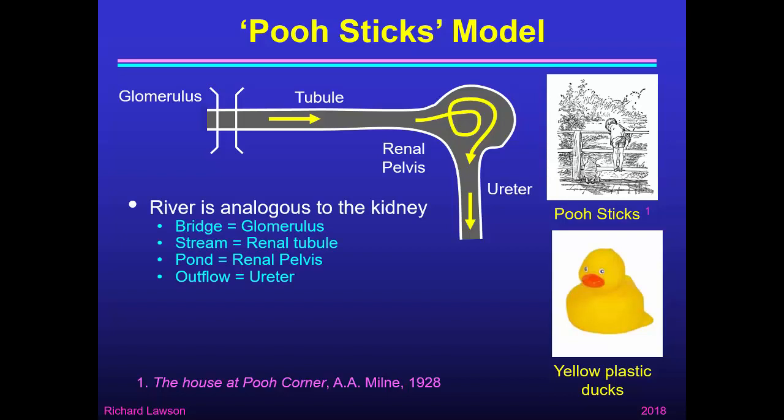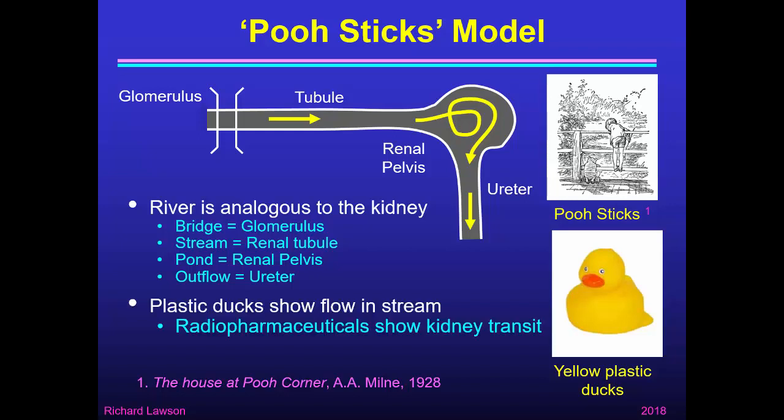The river is analogous to the kidney: the bridge where everything is thrown in is like the glomerulus where tracer enters the kidney; the stream is like the renal tubules carrying them along; a pond is like the renal pelvis where molecules or plastic ducks can circulate; and the outflow is like the ureter. The plastic ducks show the flow in the stream — you don't notice where water moves quickly or slowly until you put the ducks in. So radiopharmaceuticals show transit through the kidney in the same way as yellow plastic ducks show flow through the stream.